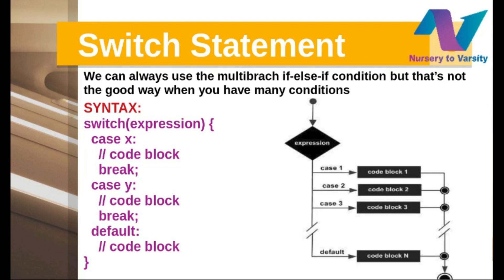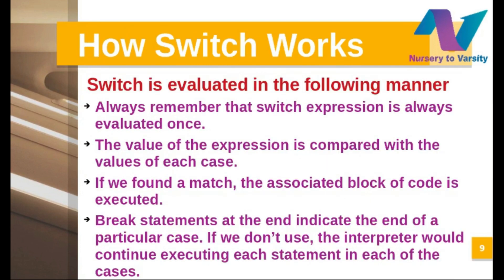Looking at the switch flowchart: the expression is passed and checked against case one. If it matches, code block one executes. If not, it goes to case two, then case three, and if no case matches, it goes to the default. Key points to remember: the switch expression is evaluated once; its value is compared with each case value. The break statement marks the end of a case — without it, the interpreter continues executing all subsequent cases.